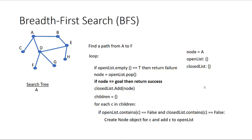After we set our current node, we check if that is the goal. If it is, we return success. If it's not, we continue pressing on through the algorithm. After checking if it's the goal and finding it's not, we add that node to the closed list. The closed list is the list of nodes we've already explored. Technically we haven't expanded this node yet — we could add it to the closed list at the bottom of the loop — but it doesn't really matter because we're about to expand it anyway.